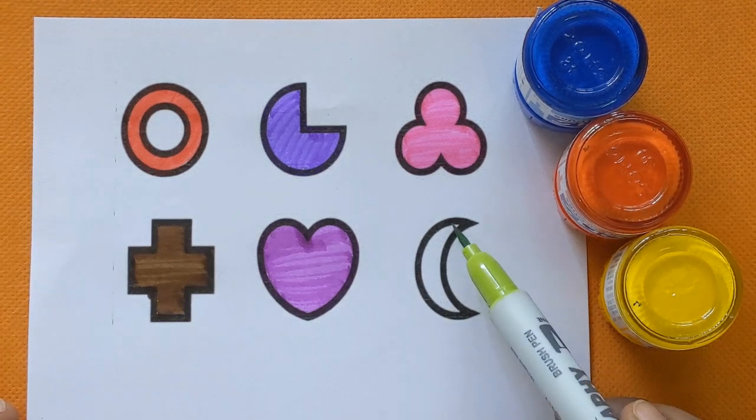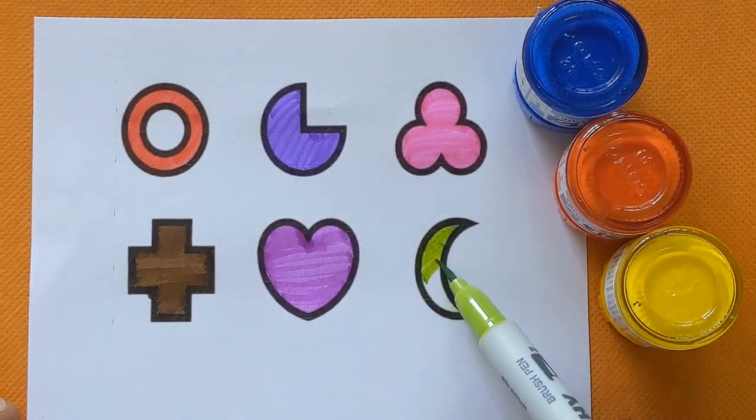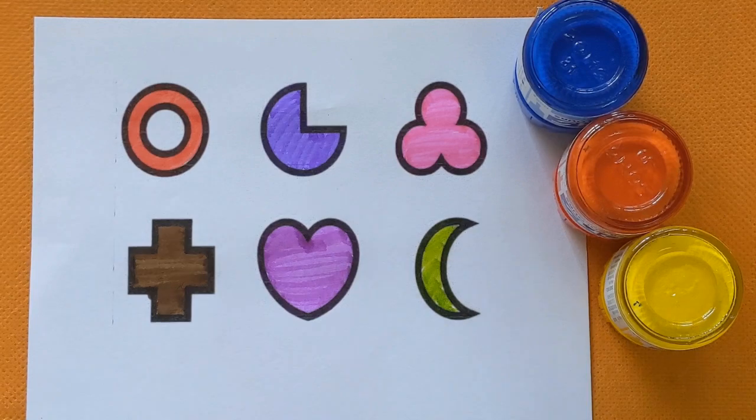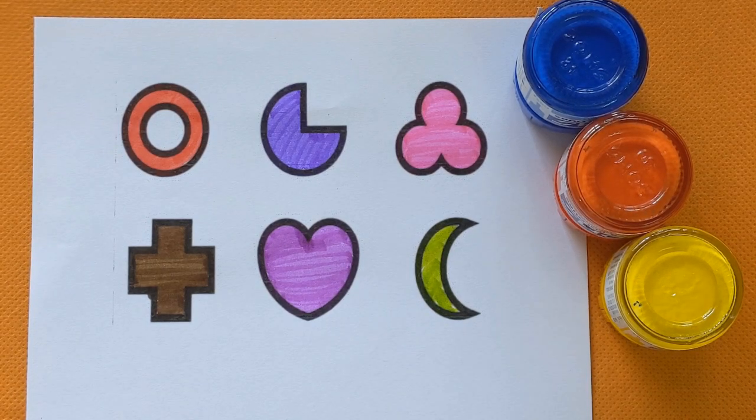And which shape is this? This is crescent with a light green color. Now we will revise shapes name, okay?